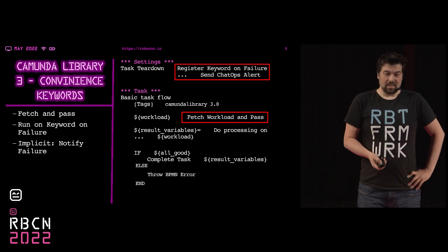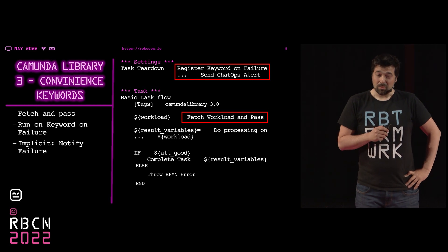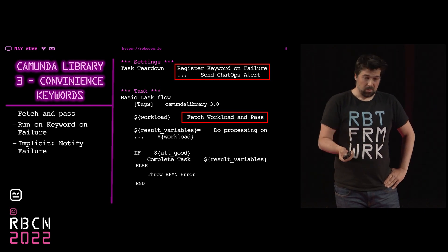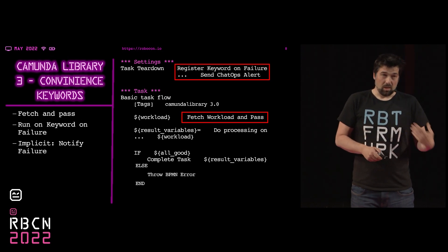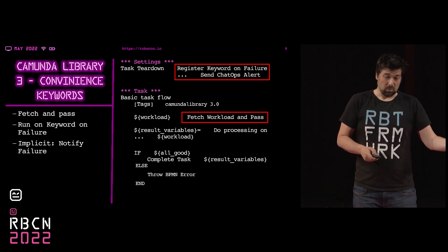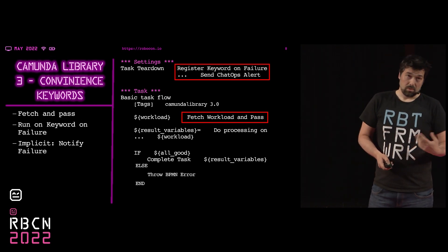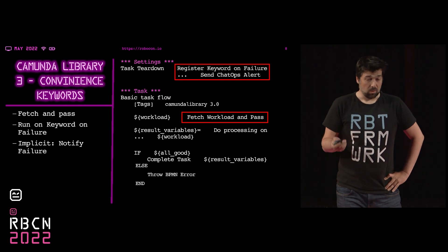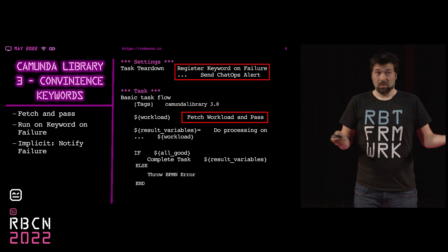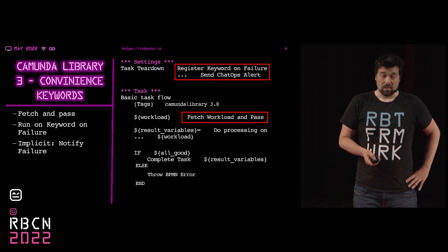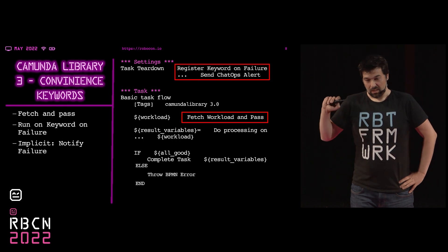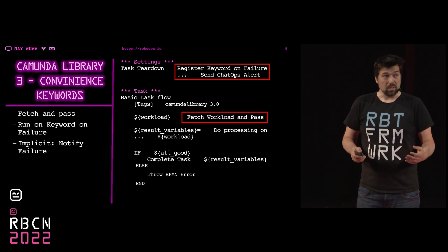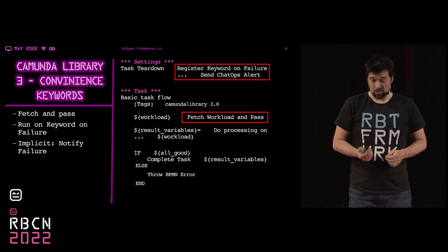So, the talk is about what's coming next. There will be a few convenience keywords in Kamunda Library 3 that help with common use cases. For example, I often ask for a workload, and if no workload is available, I finish the task — that usually takes two or three lines of code, and I would like to have one line for it. A very important feature also requested by the community is an implicit notification of failures — so if a test case or task fails really hard, the incident is raised automatically to Kamunda. In the last few weeks, new use cases have also appeared around this topic.